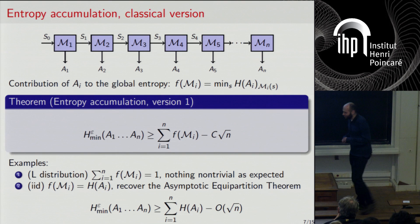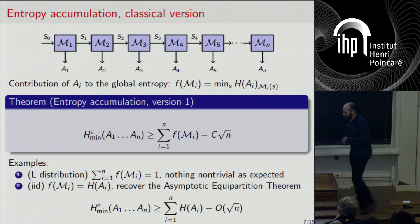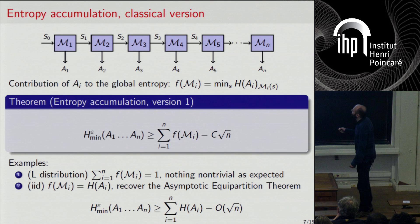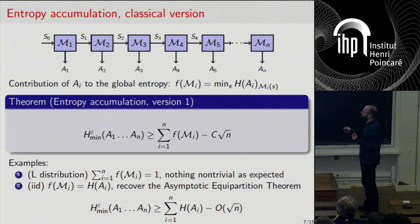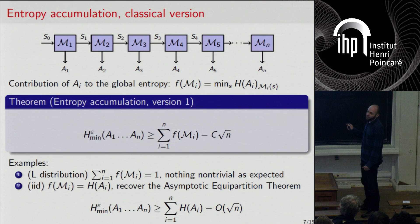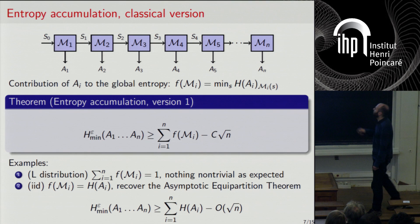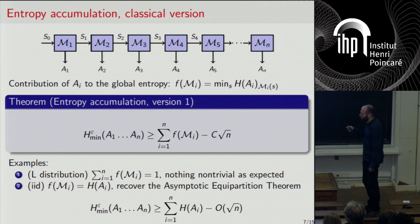Now I can state the first version of the theorem — the classical version, conditioning on nothing. It says that the smooth min-entropy, the operationally relevant quantity, is lower bounded by the sum of the contributions of each one of the maps, where the contribution of each map is the worst case over internal states of the entropy of the output. This holds up to a term in square root of n, with a constant that also depends on epsilon.